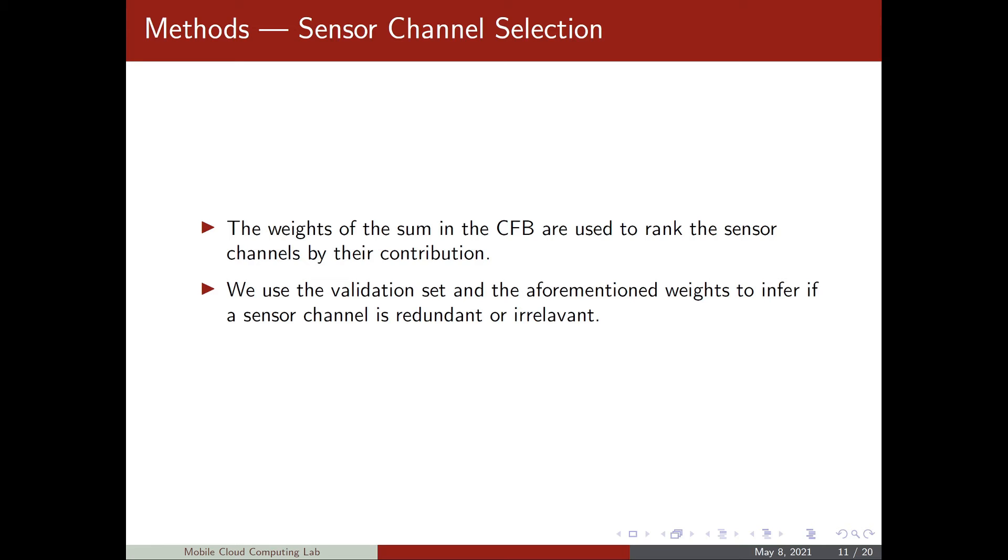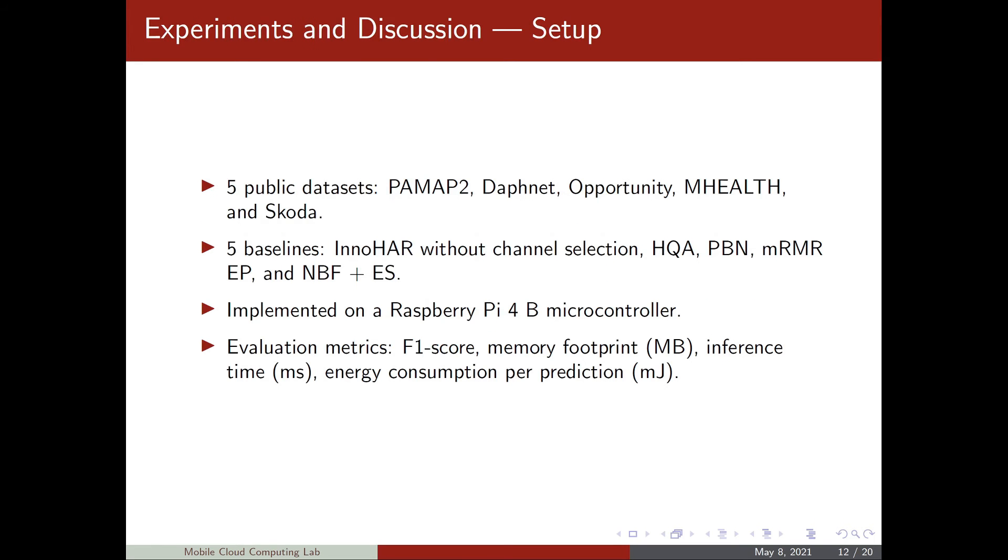The basic idea behind a sensor channel selection is that we use the weights of the sum in the channel fusion block to rank the sensor channels by their contribution. We use the weights as well and the validation set to infer if a sensor channel is or not redundant.